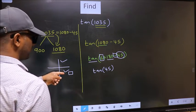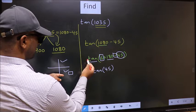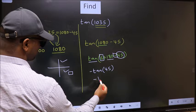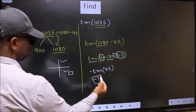And in the fourth quadrant, tan is negative. So we should put negative. So negative tan 45 is 1. This is our answer.